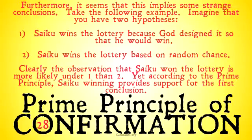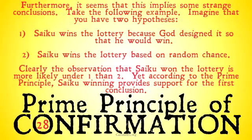And yet we could make this argument about any time someone wins the lottery, or anyone getting struck by lightning, for example. It doesn't seem that just because something has a really high unlikelihood, it's more likely that God caused it. Because people win the lottery every day, and one could imagine a world in which God did not exist where people won the lottery and God was in no way confirmed by those events. So this seems to be a really worrying consequence of the prime principle of confirmation, and a pretty good reason for us not to use it at all.